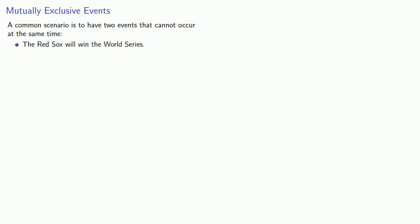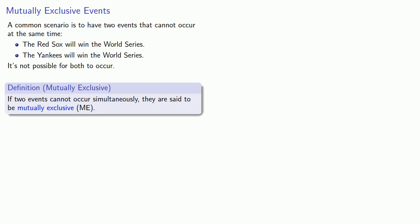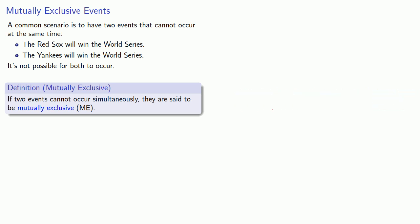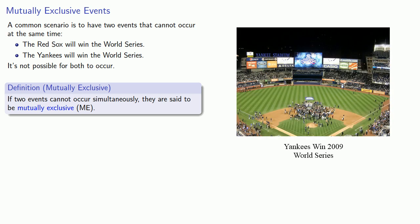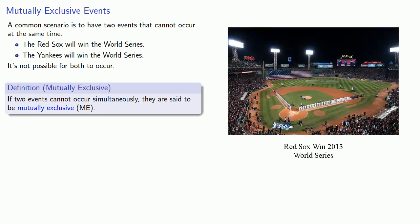A common scenario is to have two events that cannot occur at the same time. For example, the Red Sox will win the World Series versus the Yankees will win the World Series. It's not possible for both to occur. When we have events like this, we say that they are mutually exclusive. If two events cannot occur simultaneously, they are said to be mutually exclusive.